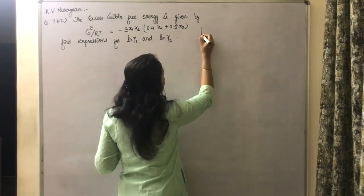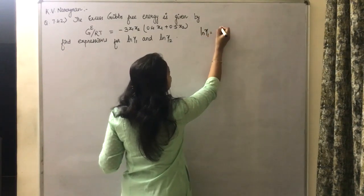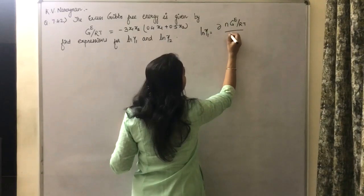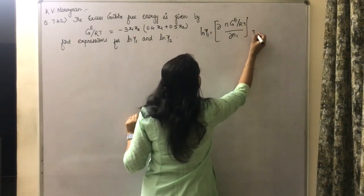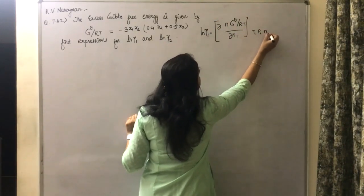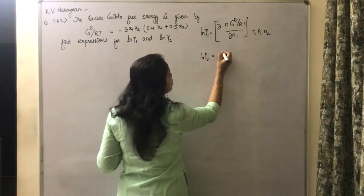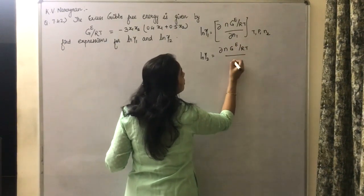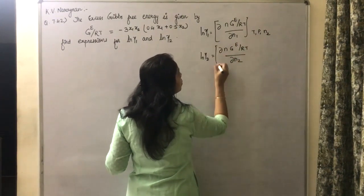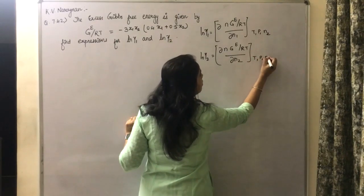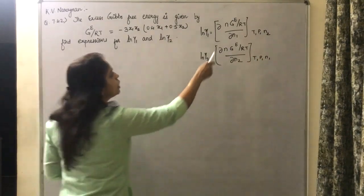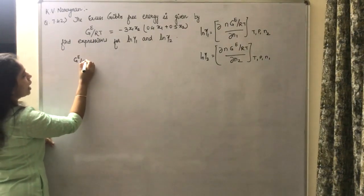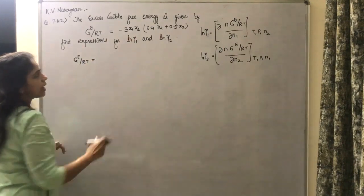We know that ln γ₁ equals the partial derivative of N·(GE/RT) with respect to N₁, at constant temperature, pressure, and N₂. Similarly, ln γ₂ equals the partial derivative of N·(GE/RT) with respect to N₂, at constant temperature, pressure, and N₁. We know this relation, and the expression GE/RT equals minus 3·x₁·x₂ is given to us.